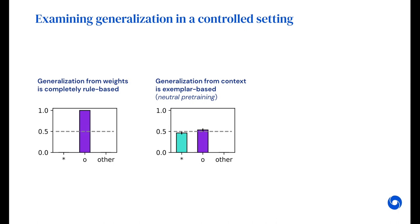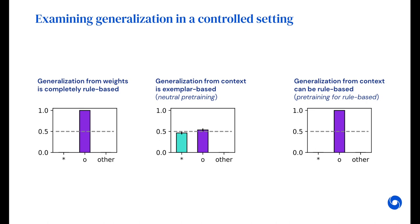However, we also find that we can actually overcome the natural bias towards exemplar-based generalization from context if we instead train the model explicitly on rule-based data.